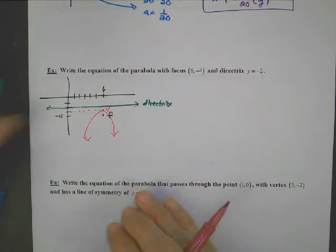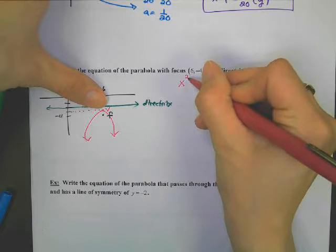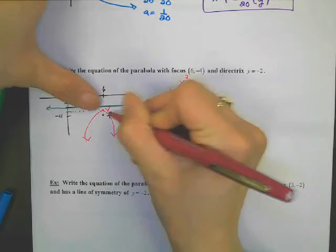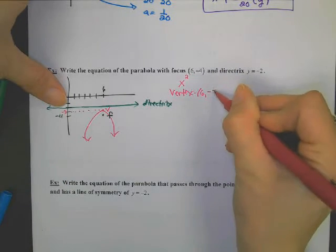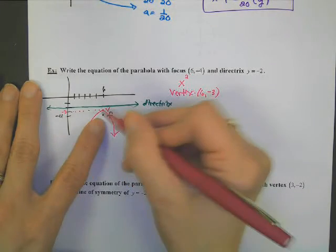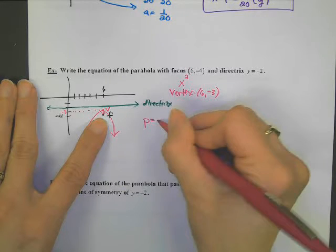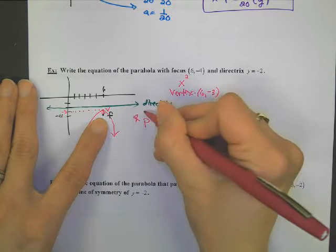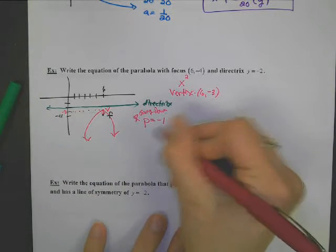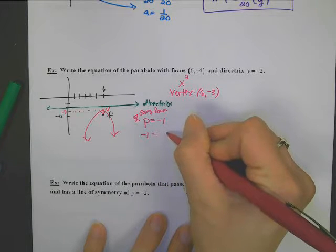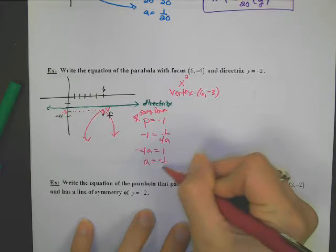So a couple of things we know from this picture: is it opening up, down, left, or right? It's opening up and down, and that means you need the equation with the x squared. The vertex from the picture is (6, negative 3). I could find the p-value from vertex to focus — careful, it's going down, so p is negative 1. Remember, the p-value will be negative if you go down or left. So p equals negative 1, and that's 1 over 4a. Cross-multiplying: negative 4a equals 1, so a is negative 1/4.